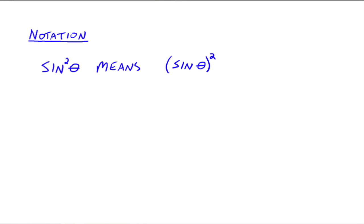Now we've got some notation. You read sine squared of theta as meaning all of sine theta, whatever that is, squared — so that means sine theta times sine theta. It does not mean sine of theta squared. There's a huge difference: here we're squaring the angle theta and then taking the sine of it, whereas here we're taking the sine of your angle and then squaring that number. So when we write sine squared of theta, it means take the sine of theta and then square it. Same with cosine, tangent, and all other trig functions.